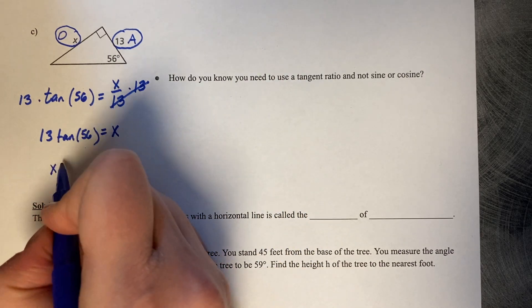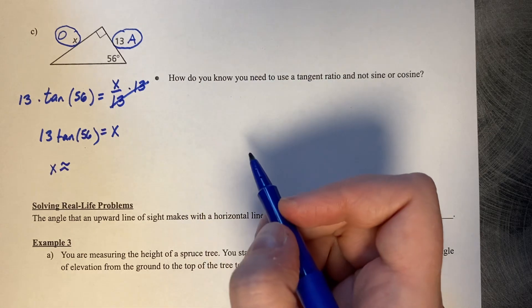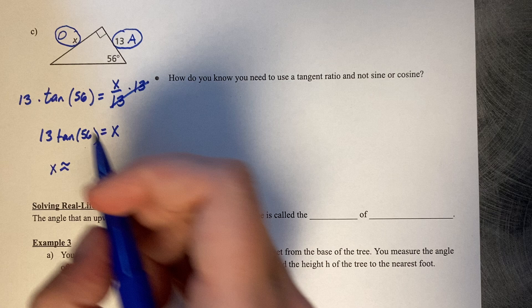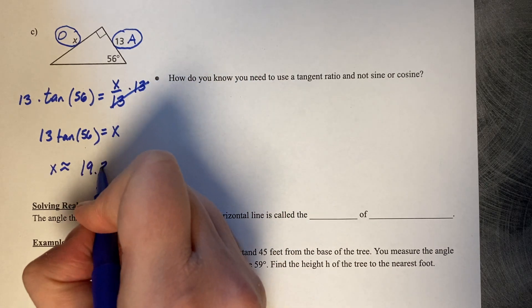13 times the tangent of 56 is approximately 19.27. But the 7 is larger than 5, so it rounds the 2 up to a 3. So 19.3.